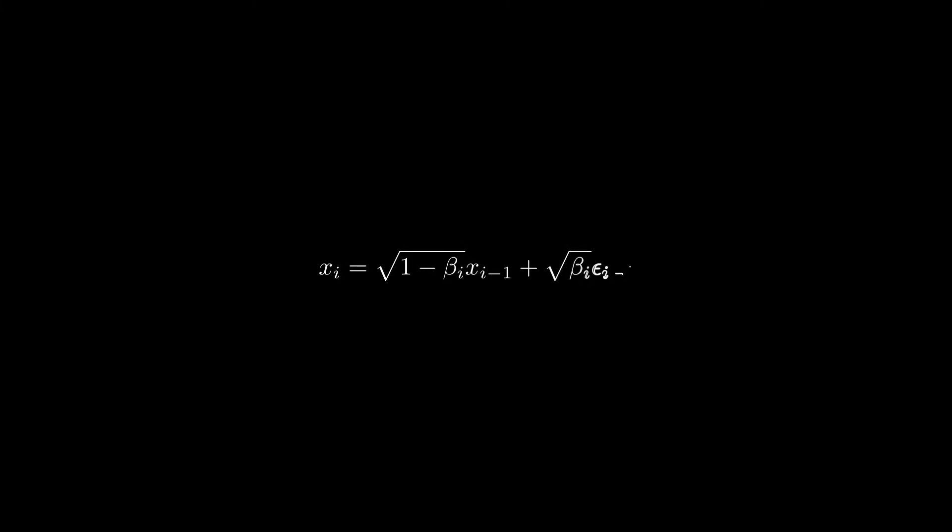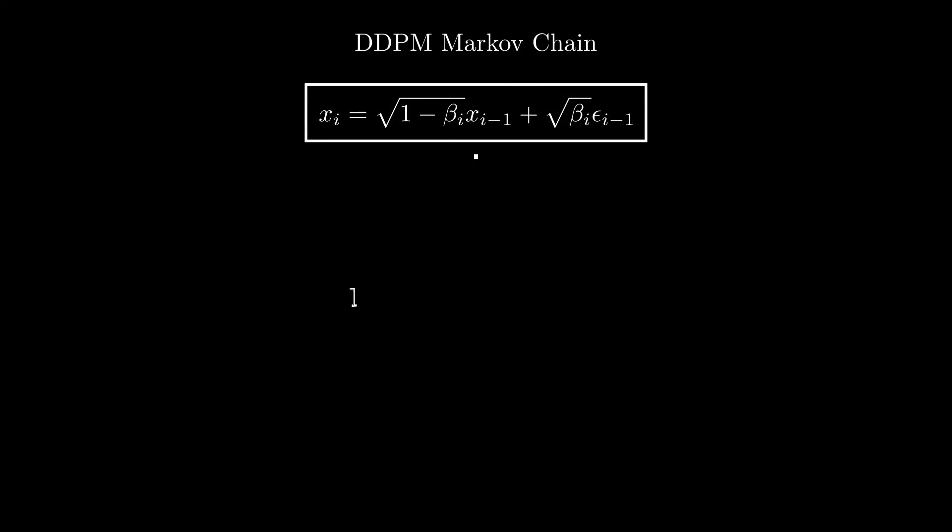So let's first recall the expression of this Markov chain describing the noising process in the DDPM framework. We'll quickly demonstrate how this chain actually converges to the Ito equation we just saw, which will also reveal the drift and diffusion coefficients.